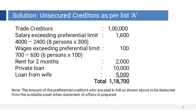Items under unsecured creditors as per List A: Total trade creditors Rs. 1 lakh. Salary exceeding preferential limit Rs. 1,600 — that is, 8 persons are given and the limit is Rs. 300, so from the total amount of Rs. 4,000, Rs. 2,400 is preferential and Rs. 1,600 is considerable. Wages exceeding preferential limit: 6 persons into Rs. 100 equals Rs. 600; out of Rs. 700, Rs. 600 is deducted and Rs. 100 is considerable. Rent for 2 months Rs. 2,000. Private loan Rs. 10,000. Loan from wife Rs. 5,000.